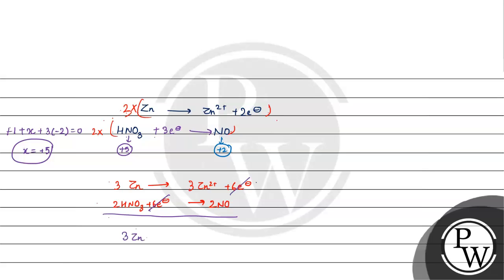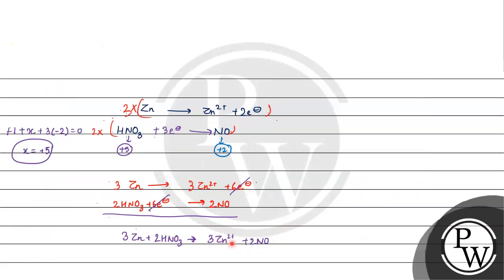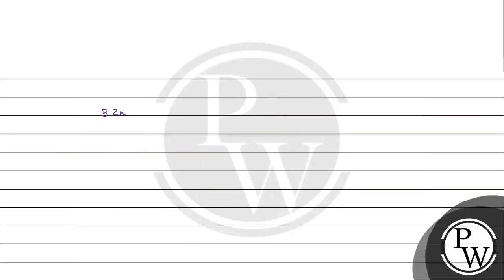So combining: 3 Zn plus 2 HNO3 gives 3 Zn²⁺ plus 2 NO. Since Zn²⁺ combines with nitrate, the reaction becomes: 3 Zn plus 8 HNO3 gives 3 Zn(NO3)2 plus 2 NO plus water.